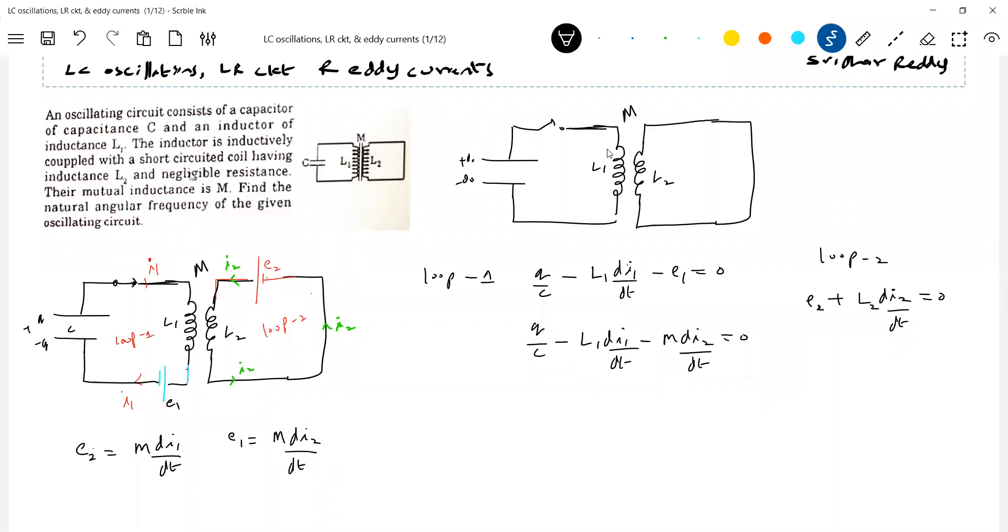Okay, now what shall we do? So this di2 by dt will eliminate. Because which current is responsible for growth of charge I1? So here I1 is equal to dq by dt. Minus I1, let on where I1 equal to, this I2 should be eliminated. Substitute this I2 from here.